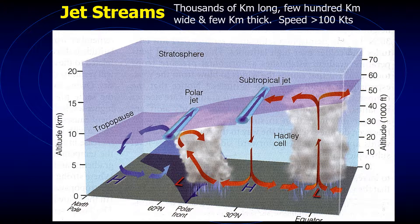The sinking of cold air and the rising of warm air provide the energy for a developing cyclone as potential energy is transformed into kinetic energy. Further, if clouds form, condensation in the ascending air releases latent heat, which warms the air. The warmer air lowers the surface pressure, which strengthens the surface low even more.